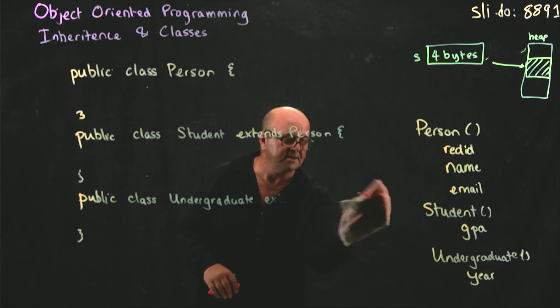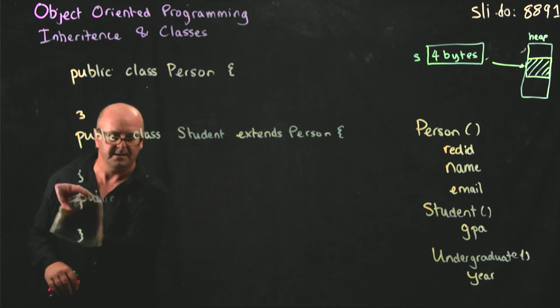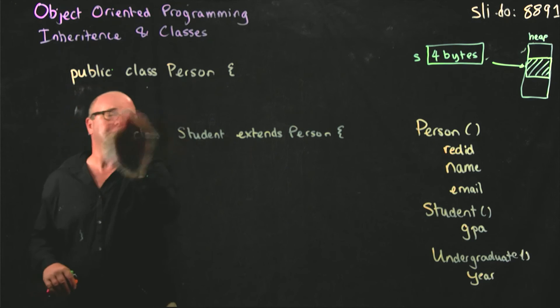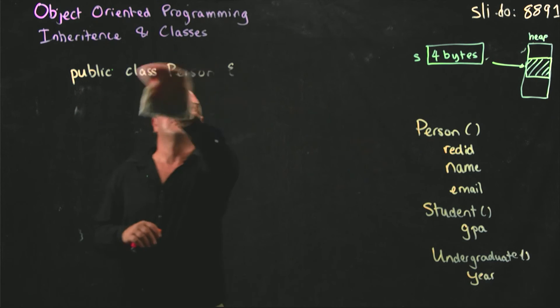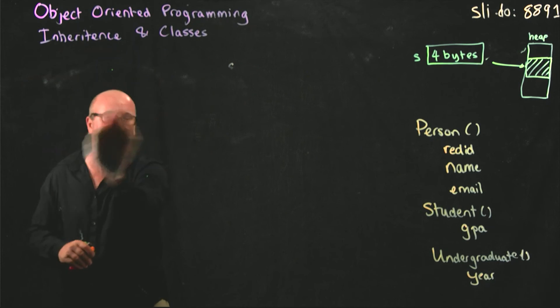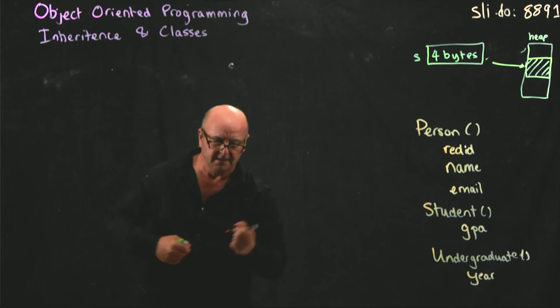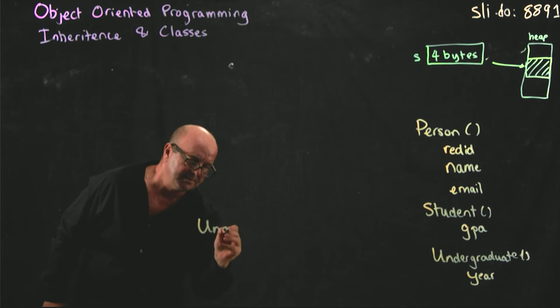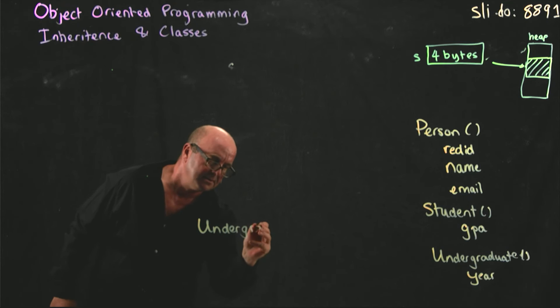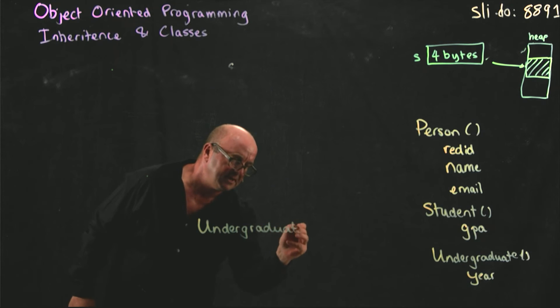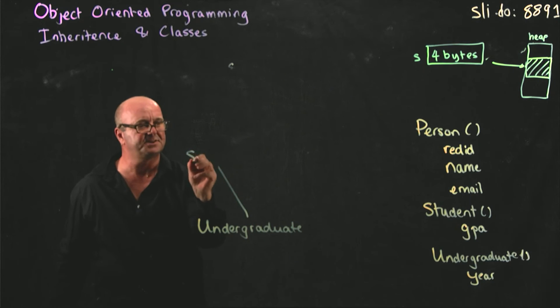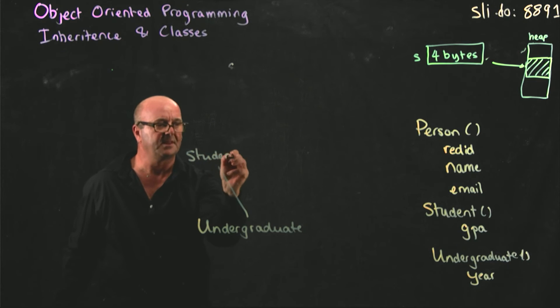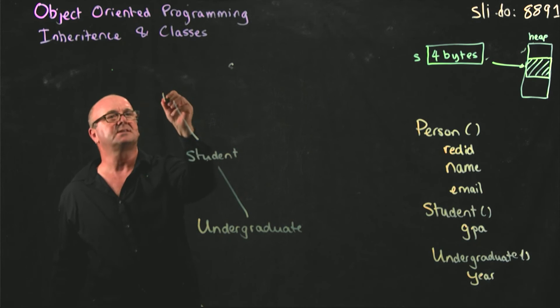And so what that means for a hierarchy is we can draw our hierarchy looking a little bit like this. So here's our undergraduate, and they have extended student, and a student has extended a person.